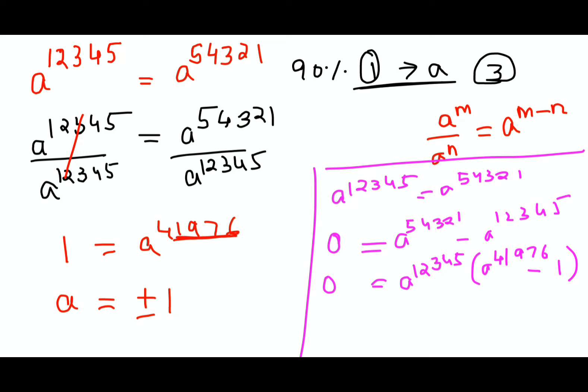From here, therefore a^12345 = 0, or a^41976 = 1. This particular scenario is already taken care of, but this scenario we haven't worked on.